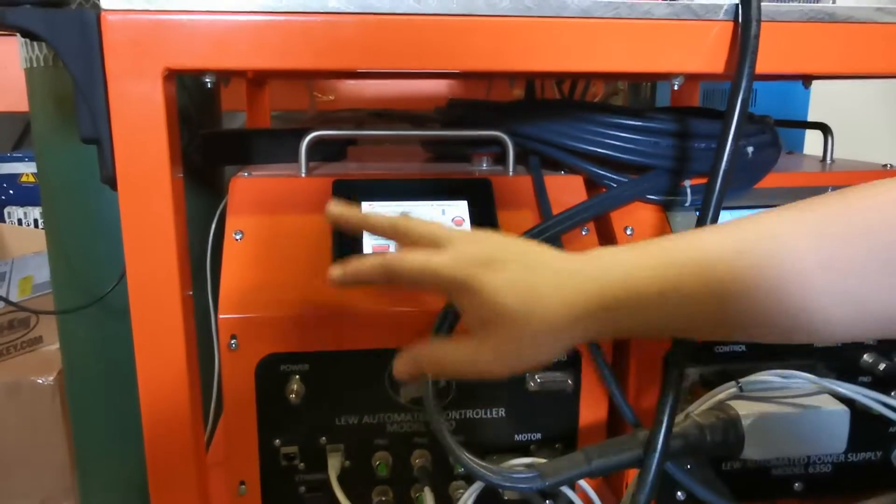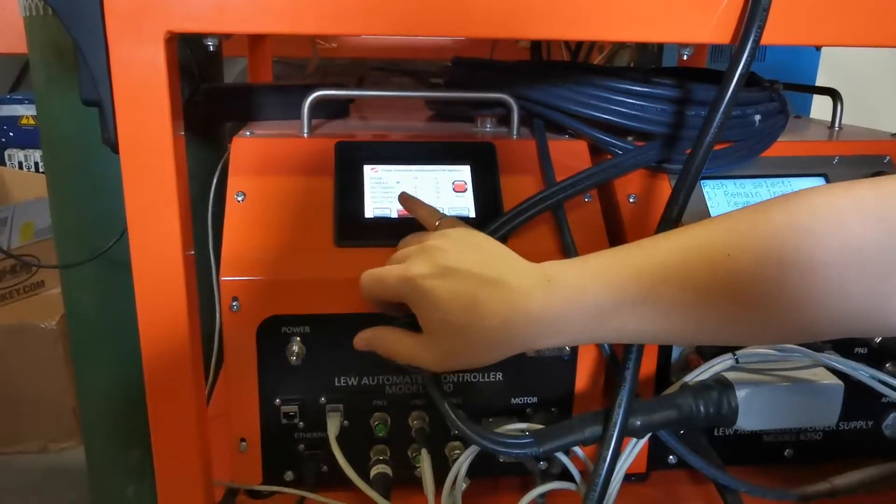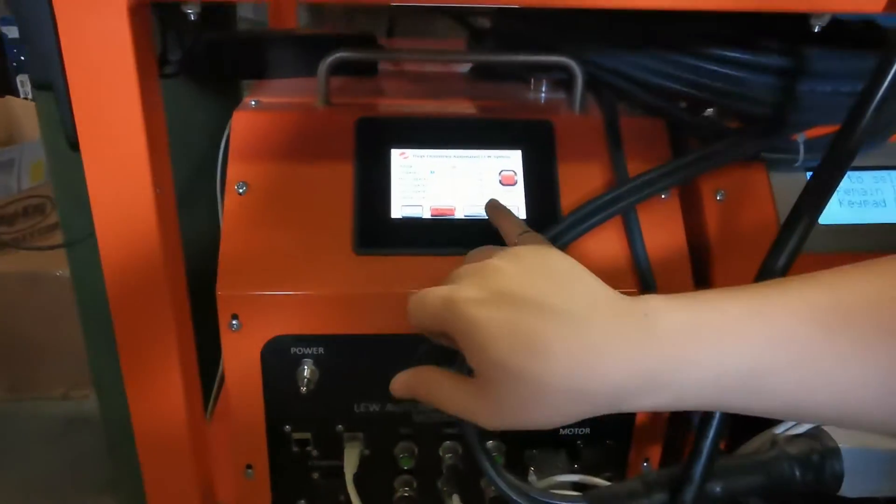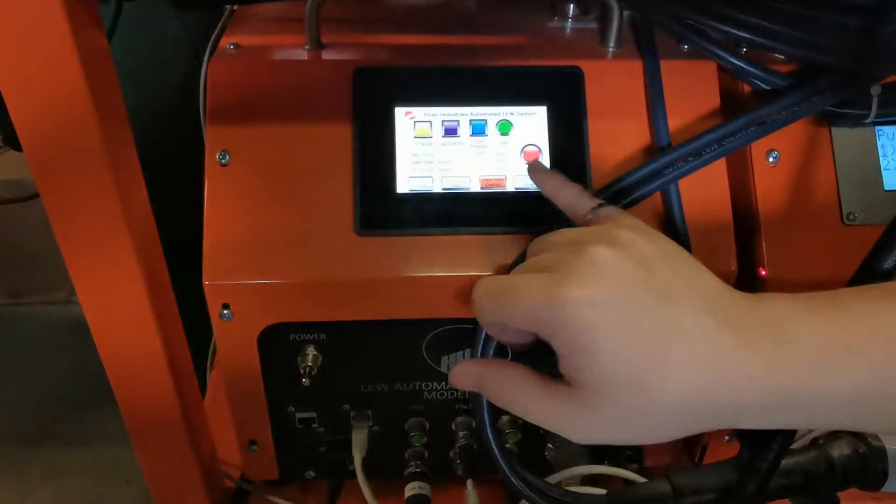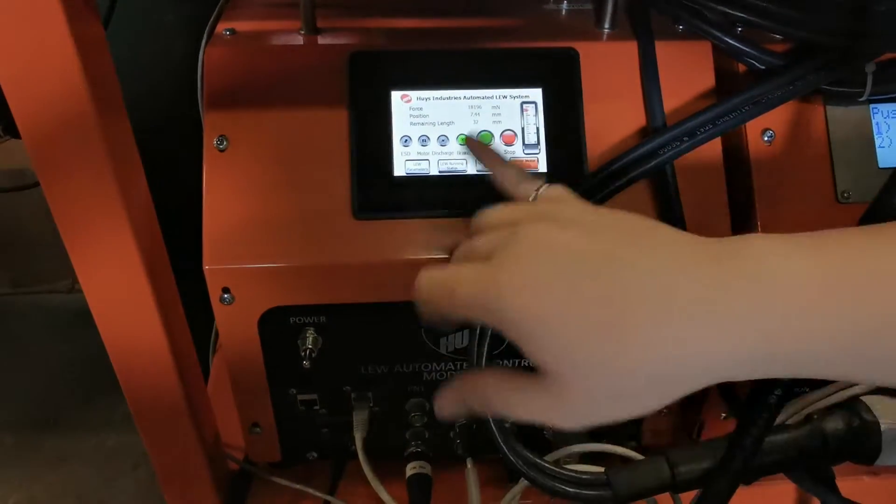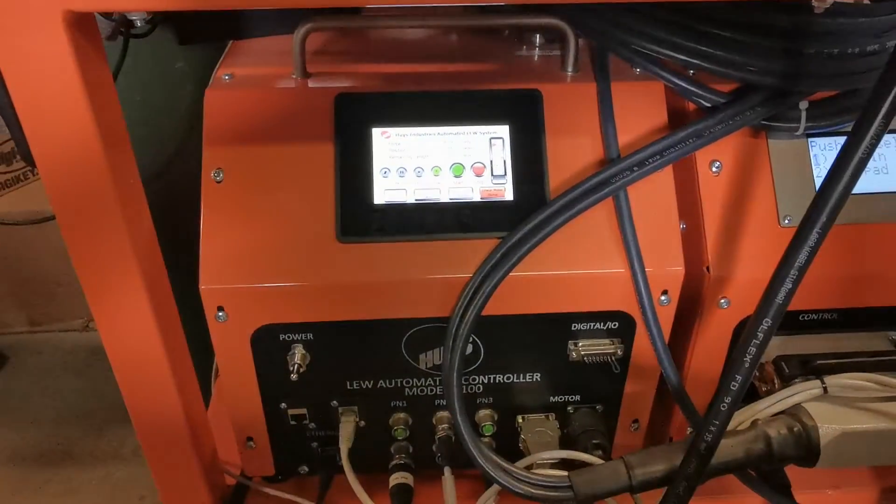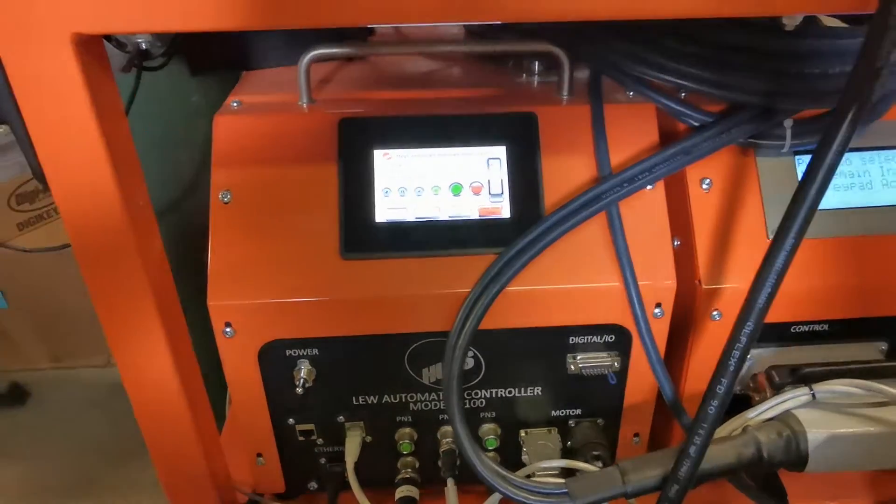This controls the ESD parameters and power supply. This tells you some status of the power supply. This is how you control the automated system, and this is feedback for the automated system. This information is all available through an Ethernet port on Modbus TCP.